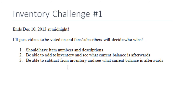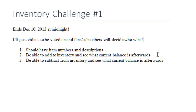Here are the three criteria that you should have in your contest entry. Number one, you should have item numbers and descriptions — so a minimum of two columns in your little database sheet. Number two, be able to add to inventory and see what the current balance is afterwards, or be able to also subtract from that inventory and see what the current balance is. So, very similar — you know, either add or take away from your inventory.